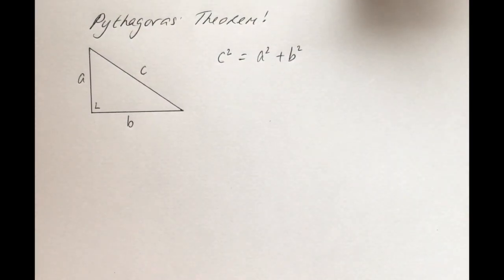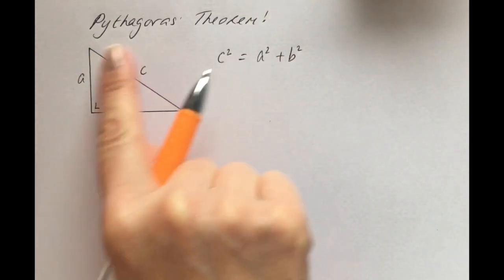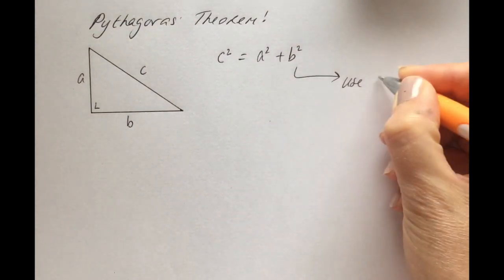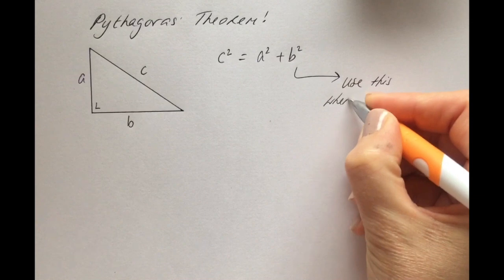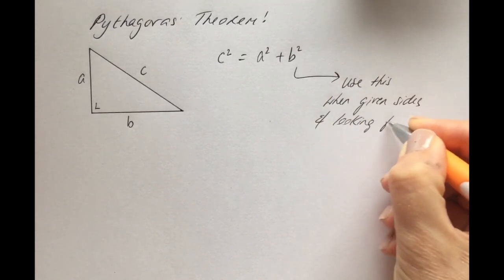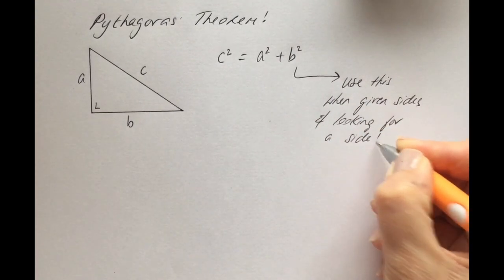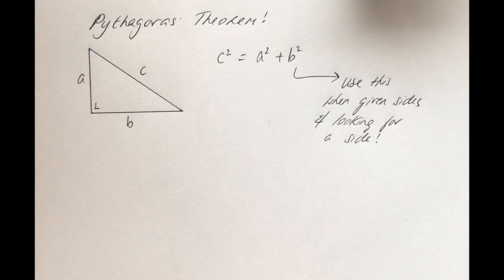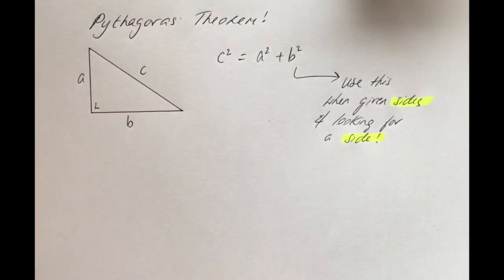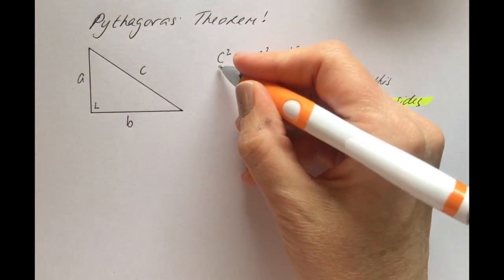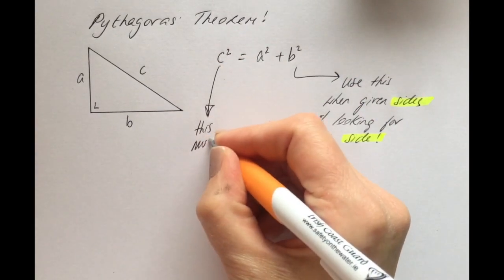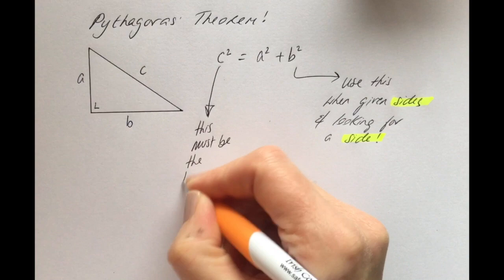The key thing to note about Pythagoras' Theorem is that this is all about the sides in a right-angled triangle. You use this when given sides and looking for a side. That's how you know to use Pythagoras — you're given sides, you're looking for a side and it's a right-angled triangle.